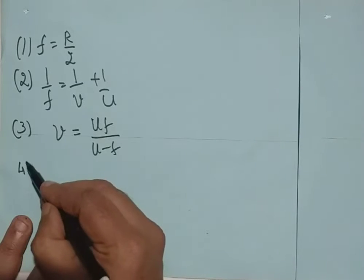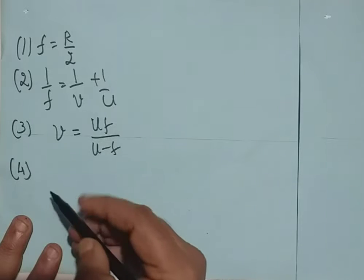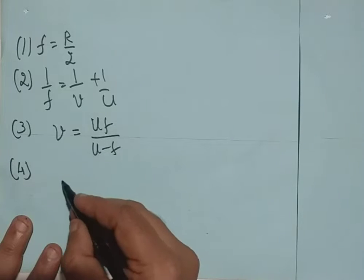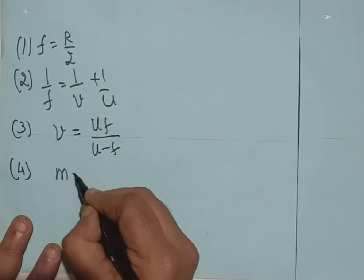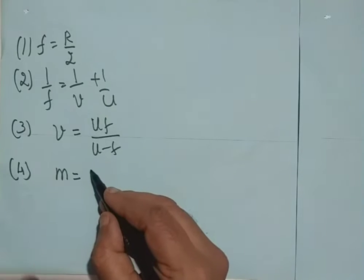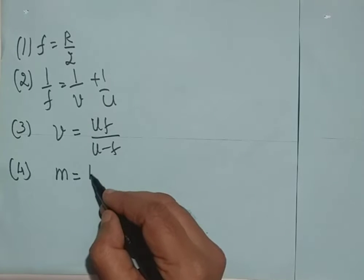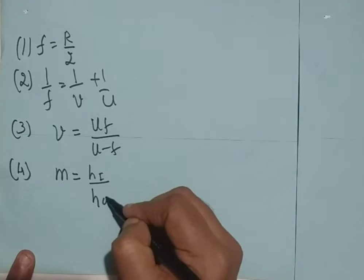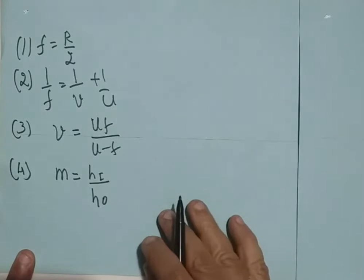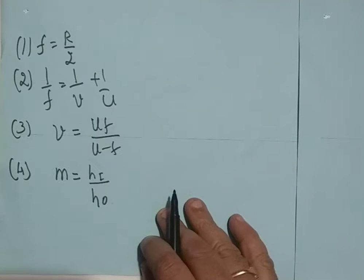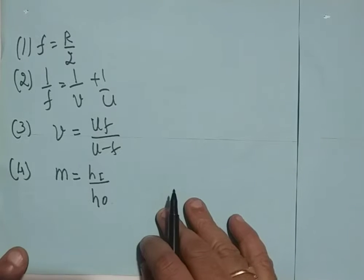The fourth formula is about the magnification. Linear magnification is HI by HO, where HI is height of the image and HO is height of the object.